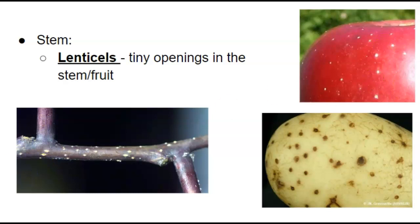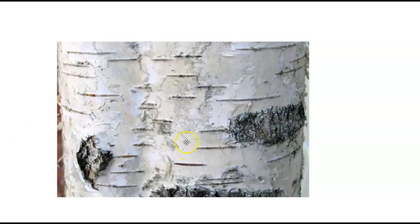So these are called lenticels. And in trees, this is like the trunk of a tree, they oftentimes get a lot bigger. So if you're looking at the trunk of a tree, you'll often see these little slits. Those are for gas exchange.